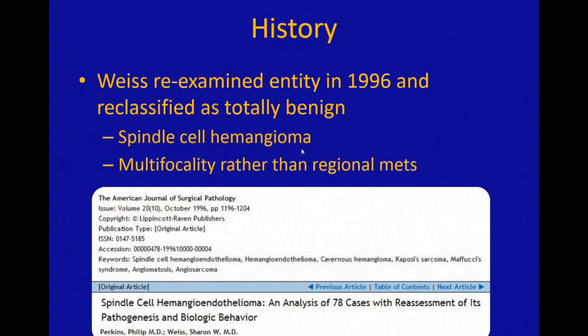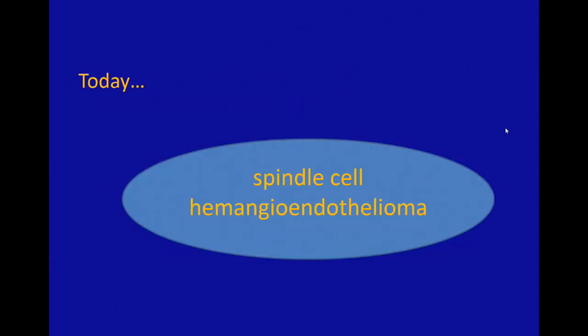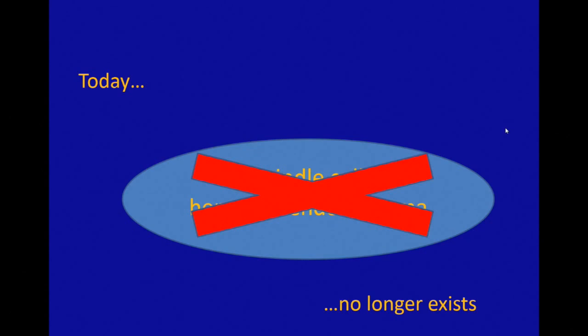Based on that, they felt that maybe it's better to call this a spindle cell hemangioma — this is a benign lesion, maybe — rather than hemangioendothelioma. It's just multifocal rather than having regional metastases. So, because of that, spindle cell hemangioendothelioma no longer exists. It does not exist as an entity, and you should never use that name in practice anymore. It is an obsolete term.